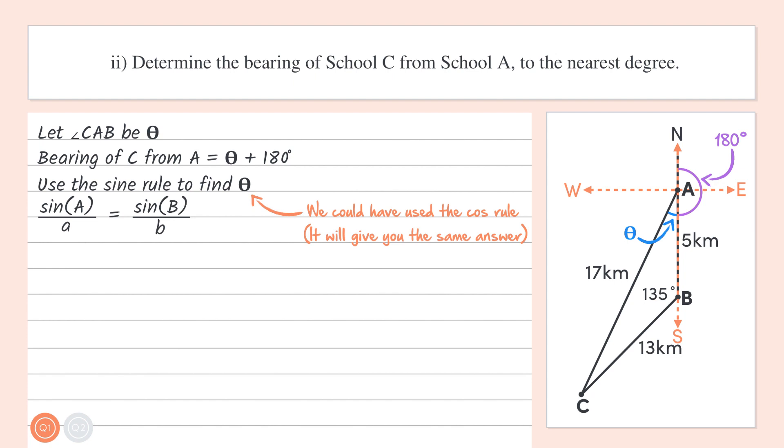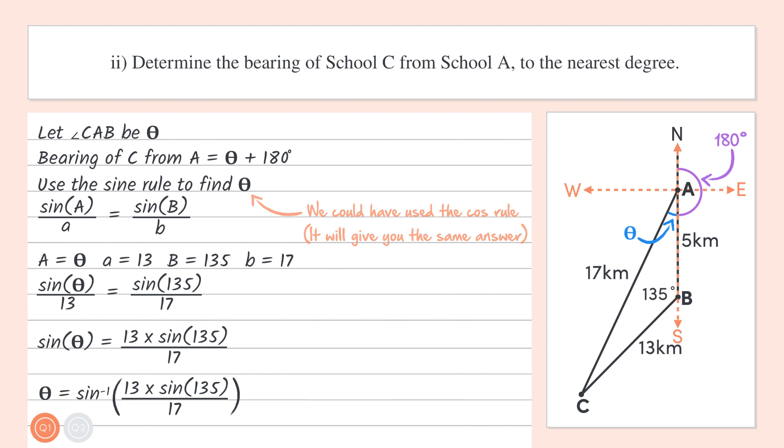Again, I'm just going to jump straight into the equation and not go through the substitution in detail. So we have sine theta over 13 equals sine 135 divided by 17. Multiplying both sides by 13 cancels out the 13s on the left-hand side to give us sine theta equals 13 times sine 135 all divided by 17. Then to get theta as a subject, we take the inverse of sine. So theta is equal to the inverse sine of 13 times sine 135 divided by 17. Then we can simply plug this into our calculators to get theta equals 32.73325.